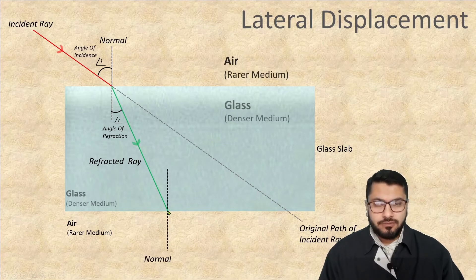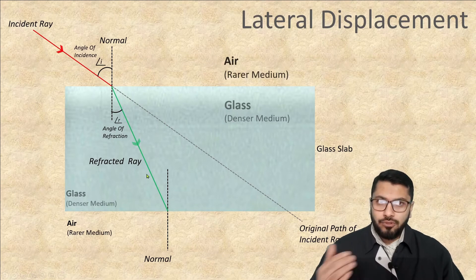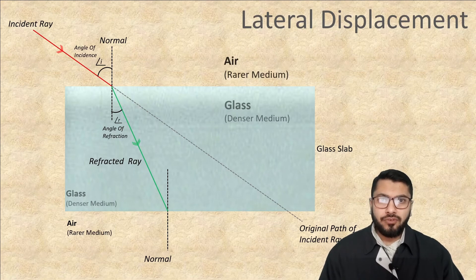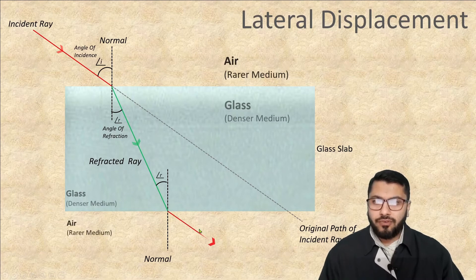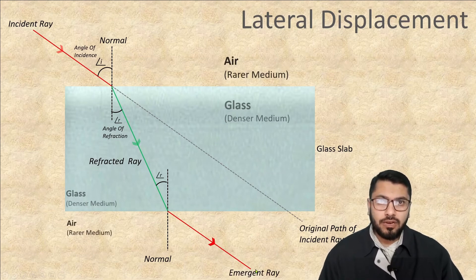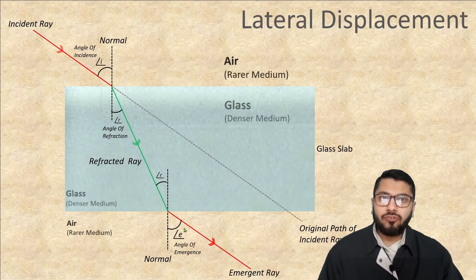At the point where the refracted ray hits the second surface, I draw another normal. This is the opposite phenomenon: when the ray goes from a denser medium to a rarer medium, it deviates away from the normal. This angle R is equal to this angle R because these two normals are parallel to each other and these are alternate angles. When this ray goes out, it deflects away from the normal — you can see the red ray deflecting away. This ray is called the emergent ray, and the angle it makes with the normal is called the angle of emergence.